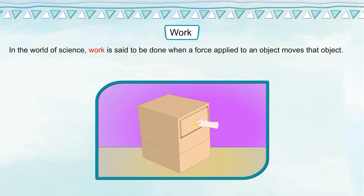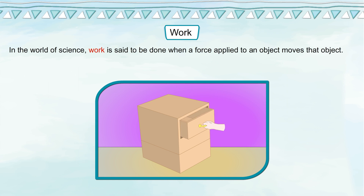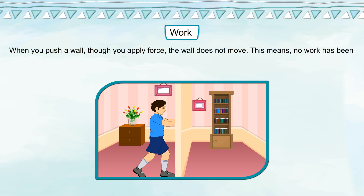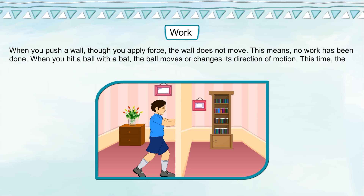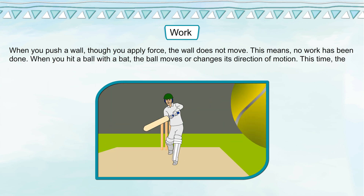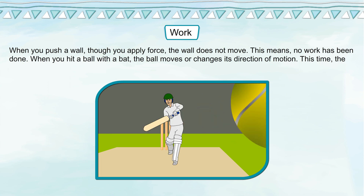Work: In the world of science, work is said to be done when a force applied to an object moves that object. When you push a wall, though you apply force, the wall does not move, which means no work has been done. When you hit a ball with a bat, the ball moves or changes its direction of motion. This time, the work gets done.